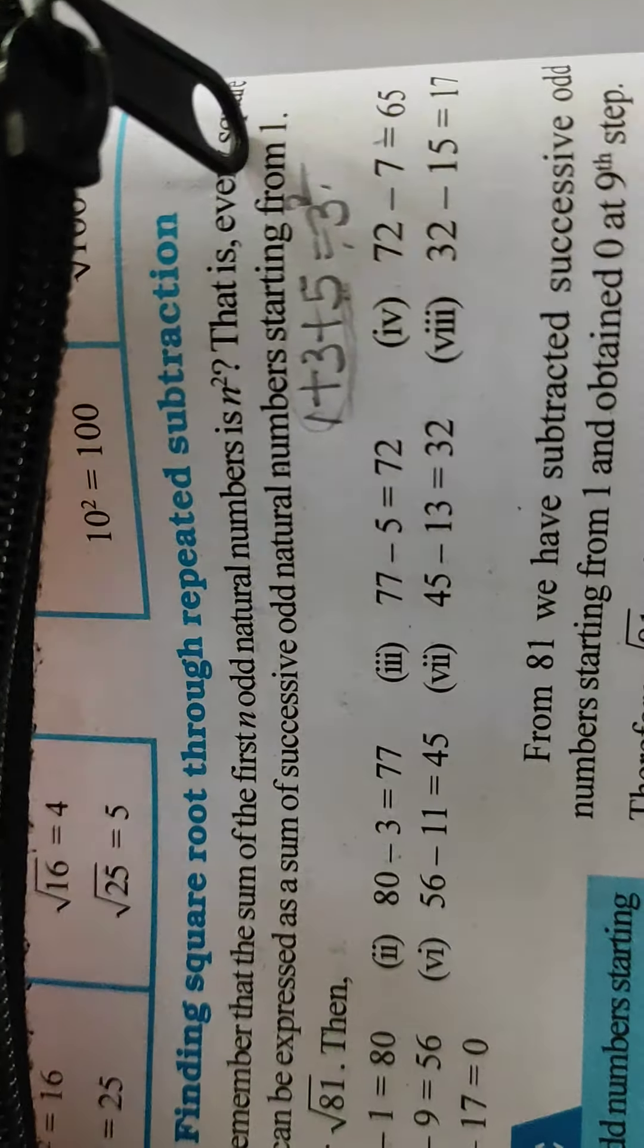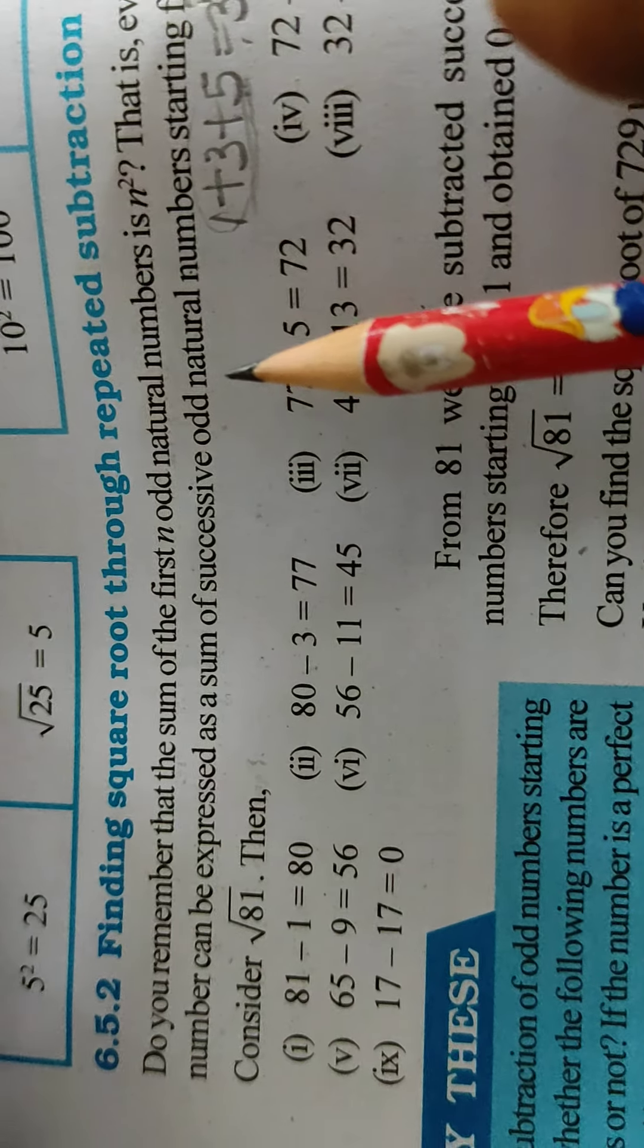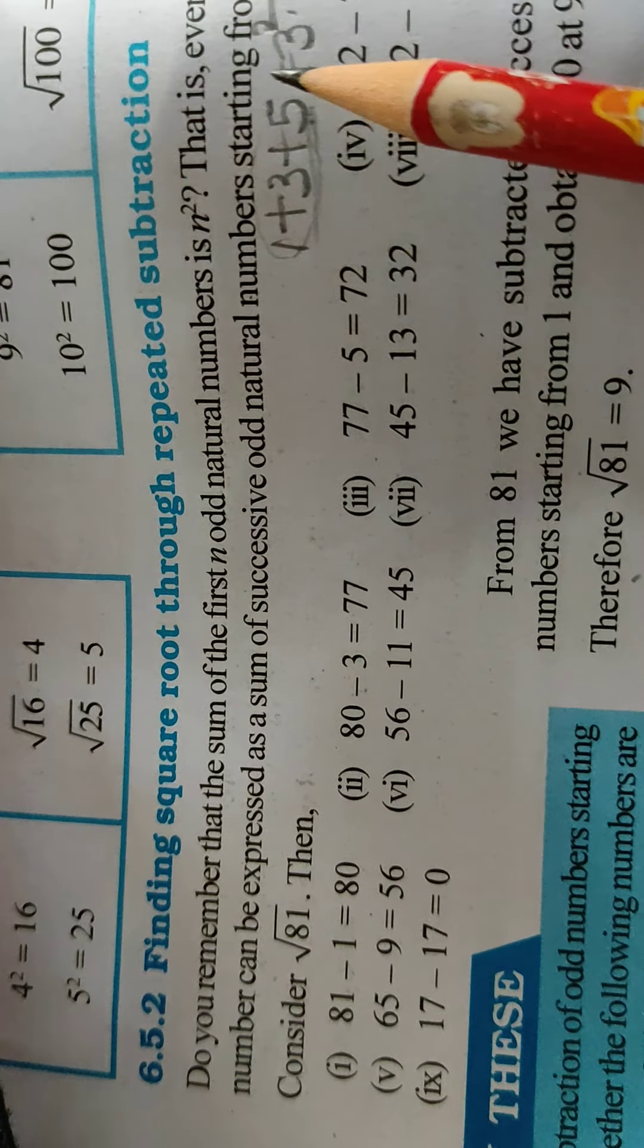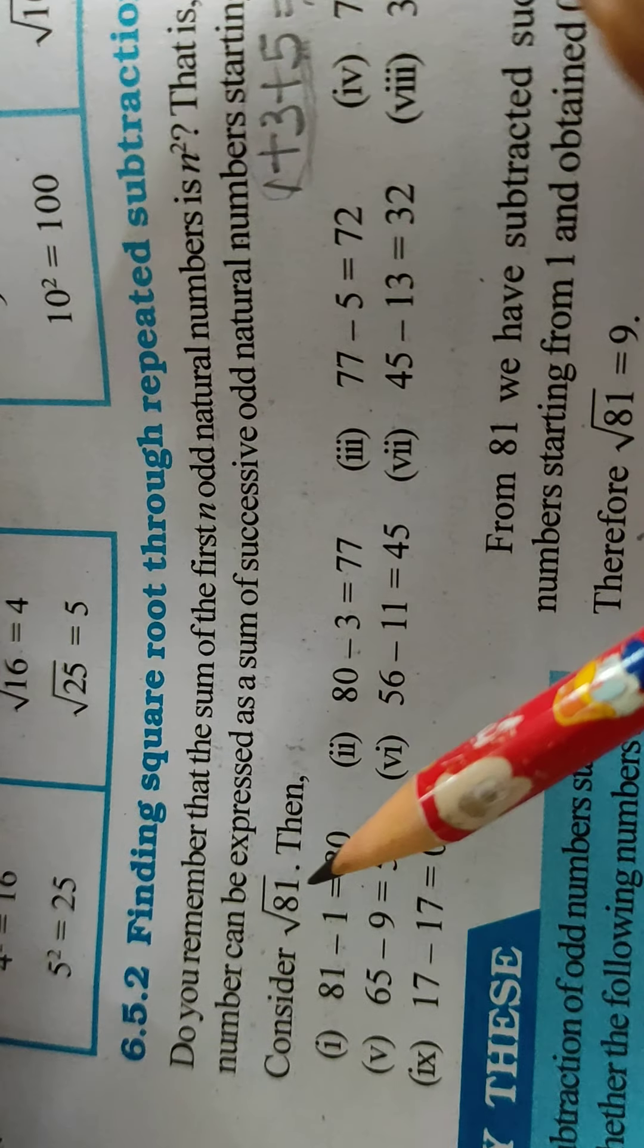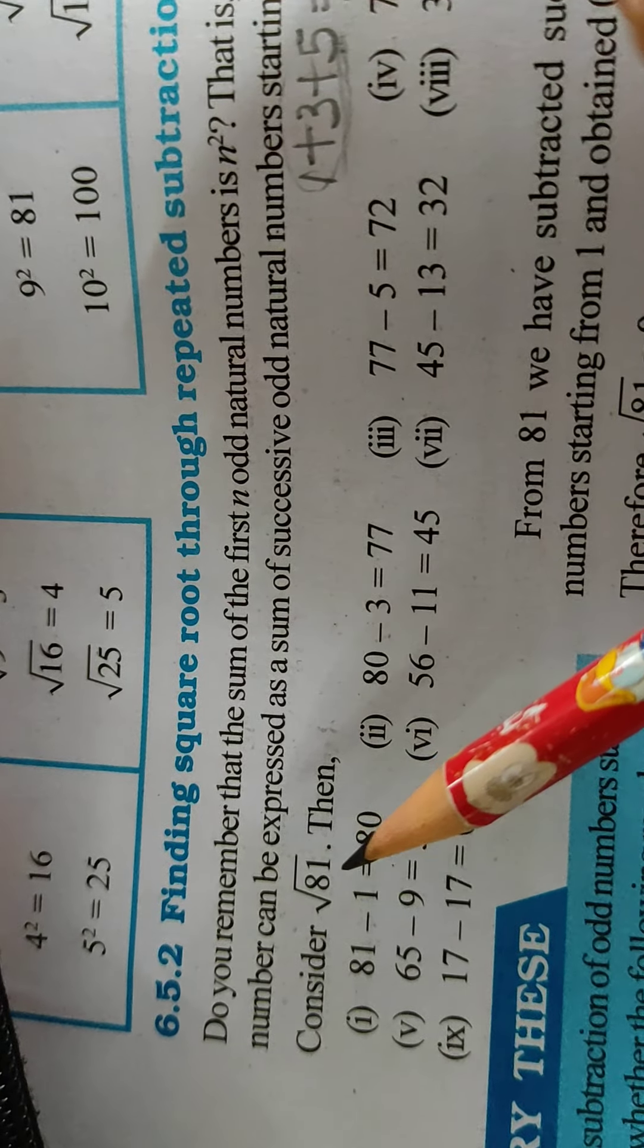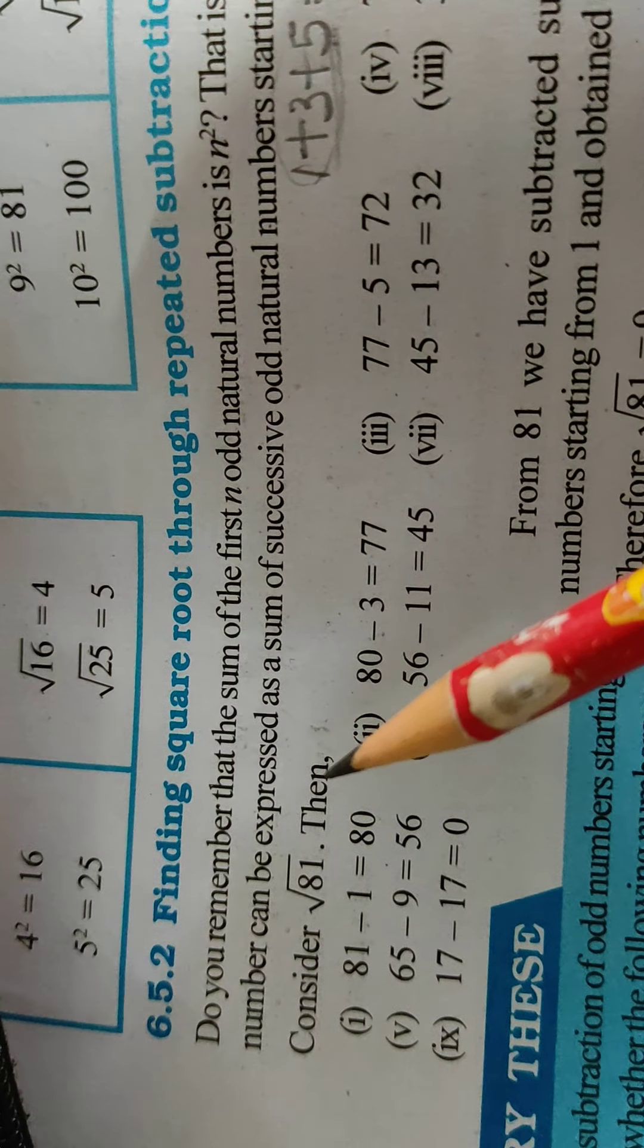That is, even square numbers can be expressed as sum of successive odd natural numbers starting from 1. Okay. Consider we want to calculate the square root of 81, so successive odd natural numbers we will subtract.